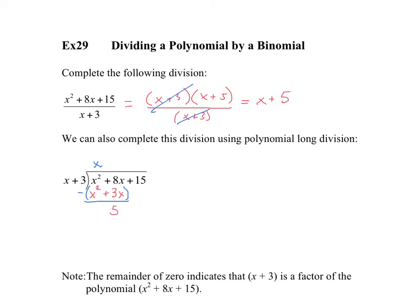We have 5x, and then we drop down the 15. To review: we took x squared, divided by x to get x, multiplied to get x squared plus 3x, then subtracted. Now we repeat the same process: 5x divided by x is 5, so we write plus 5.